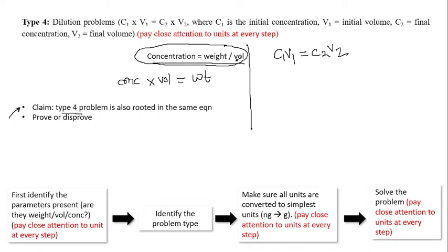C1 and V1 are the initial concentration and initial volume, and C2 and V2 are the final concentration and final volume. Multiplying C1 by V1 gives you weight one — we are multiplying to get weight one.